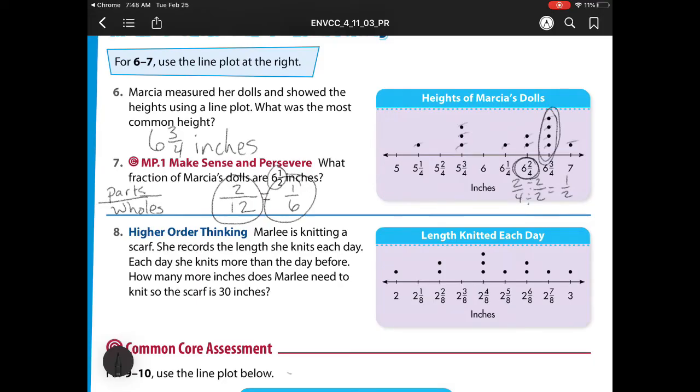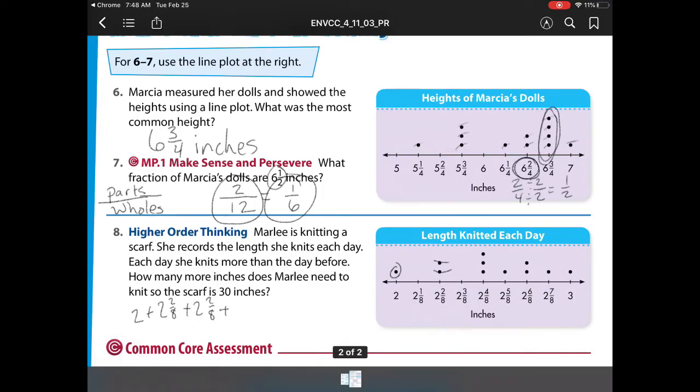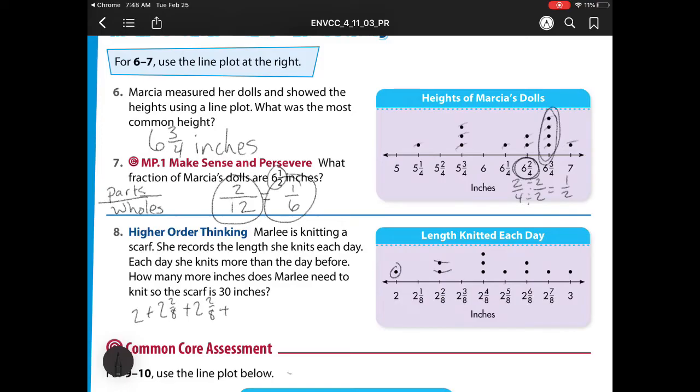For number 8, we have Marley is knitting a scarf. She records the lengths she knits each day. Each day she knits more than the day before. How many more inches does Marley need so that the scarf is 30 inches long? Well, what I have here is I need to find the total length that she's knitted so far. So I have 2 from this first dot, plus 2 2/8, plus 2 2/8, plus... So I'm actually adding all of these guys up together. Now what's going to be easier for me is if right above those dots, at least for my own thinking, I'm going to put what they equal. So here she has knitted 2 inches.